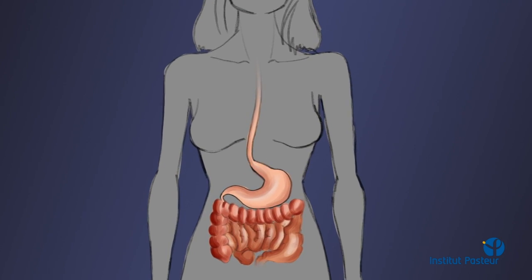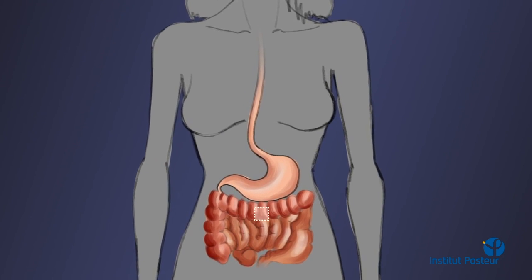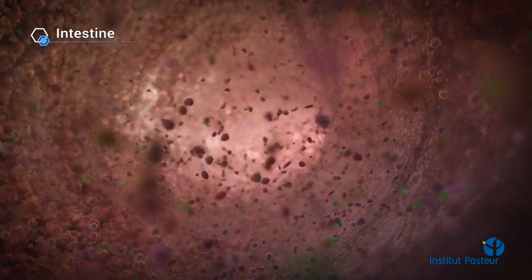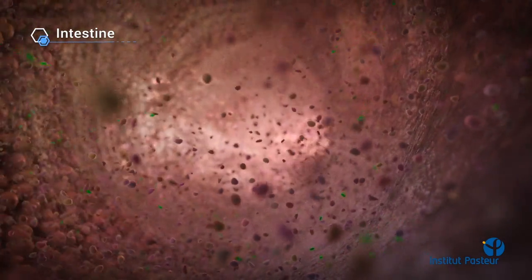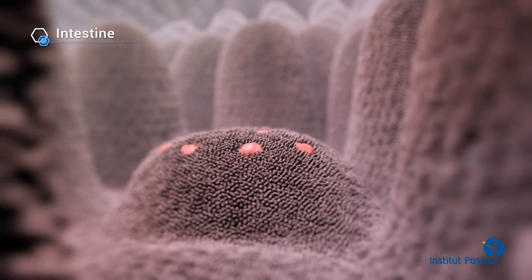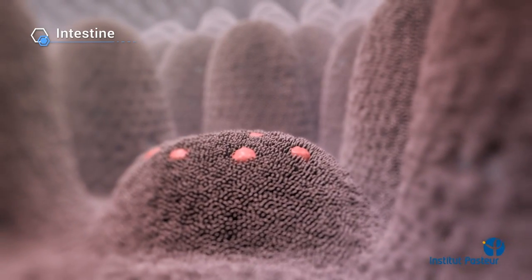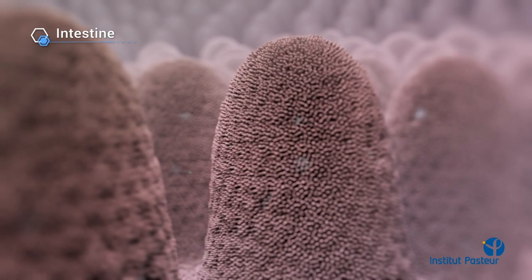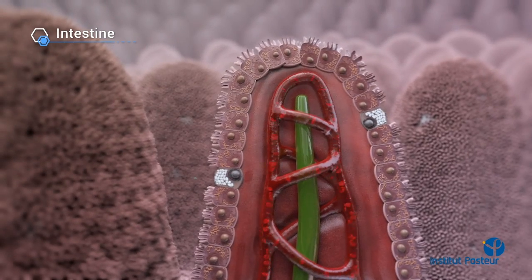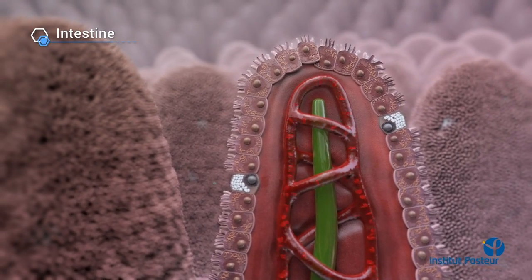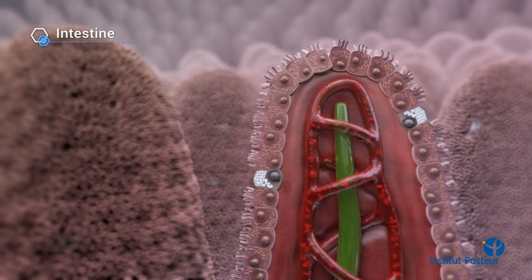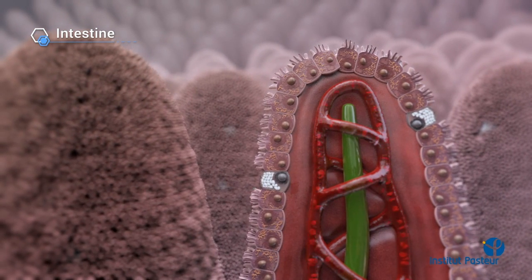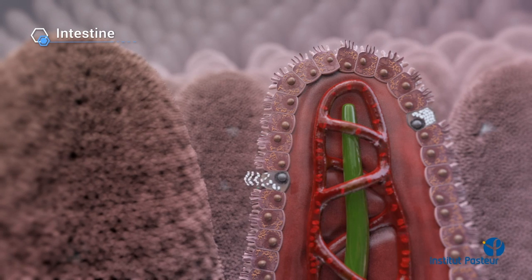Infection typically starts via the ingestion of food contaminated with Listeria. Once in the intestine, the bacteria may invade different regions of the intestinal epithelium, such as the Peyer's patches or, preferentially, the intestinal villi. Listeria targets either the tip of the villi, where apoptotic cells are extruded, or more commonly lateral goblet cells — cells specialised in mucous secretion.